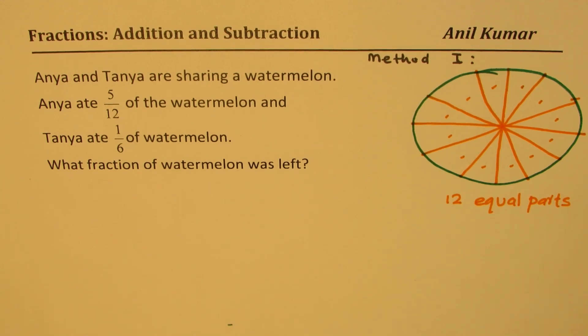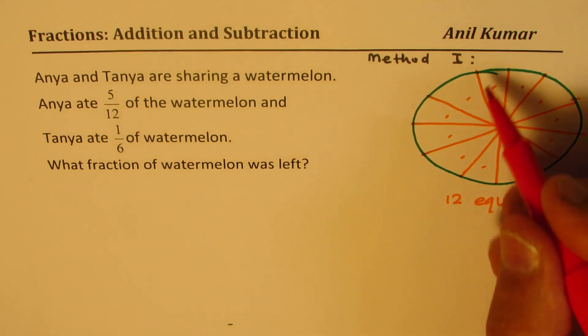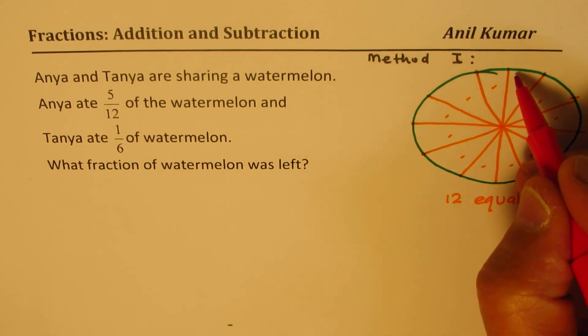Now, we are saying that Anya ate 5/12ths, that means out of this 5 of them.